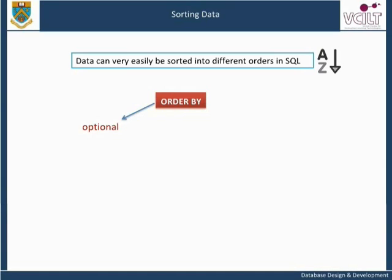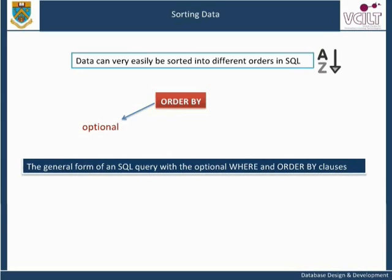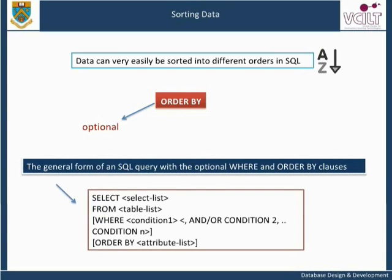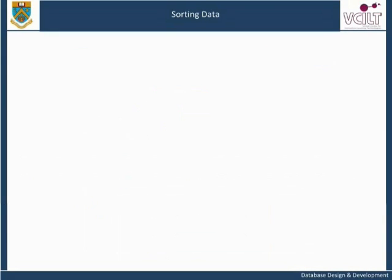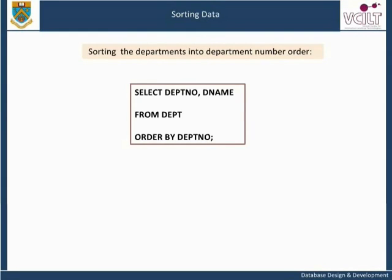The general form of an SQL query with the optional WHERE and ORDER BY clauses is: SELECT select_list FROM table_list WHERE condition1 AND/OR condition2 ... condition_n ORDER BY attribute_list. An example would be to sort the departments into department number order: SELECT department number, department name FROM department ORDER BY department number.